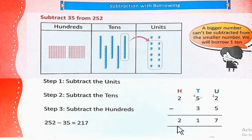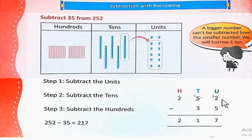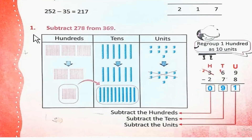So the answer is 217. 252 minus 35 is equal to 217. हम borrow क्यों करते हैं? क्योंकि यहाँ हमें 2 से 5 minus करना है — 2 से 5 minus नहीं होता, इसलिए हमें borrow करना पड़ता है। Number 1: Subtract 278 from 369.